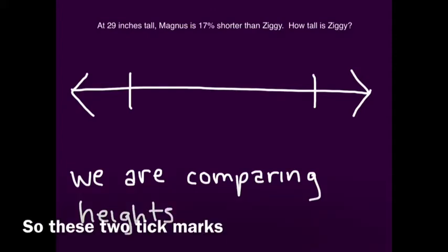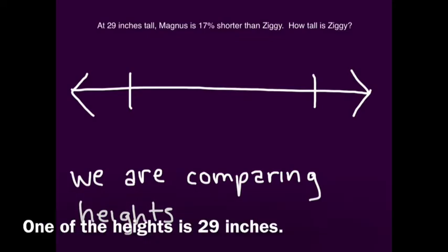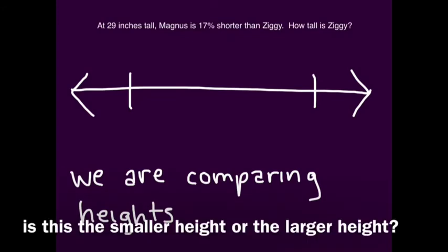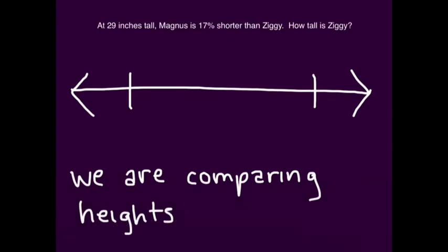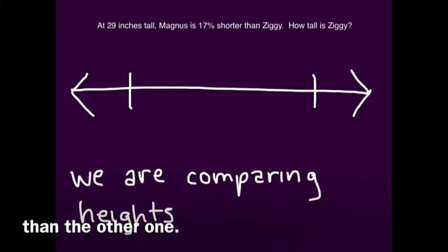These two tick marks represent the two heights. Now here's where you have to read closely. One of the heights is 29 inches, and you have to determine: is this the smaller height or the larger height? If you read closely, the 29 inches is shorter than the other one.